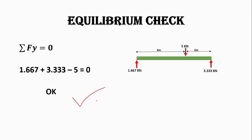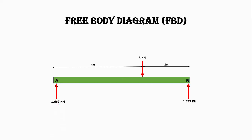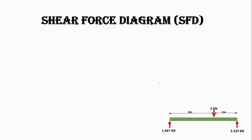Let's draw the free body diagram. We have a beam AB with a 5 kilonewton point load acting at 4 meters from A and 2 meters from B, with support reactions of 1.667 kilonewtons at A and 3.33 kilonewtons at B. This is the free body diagram.